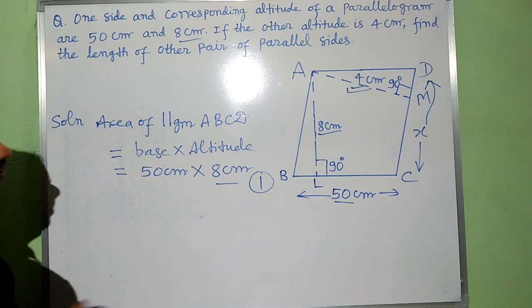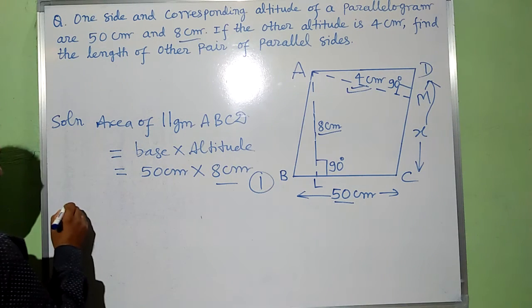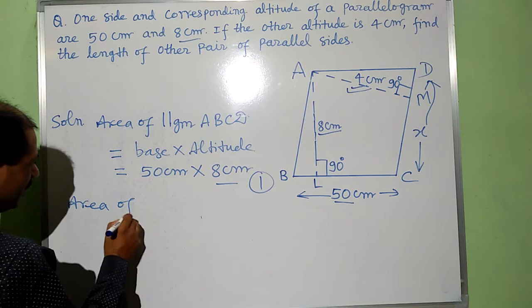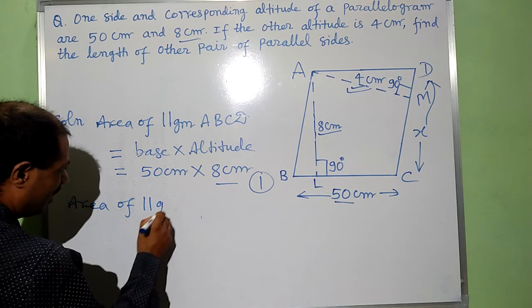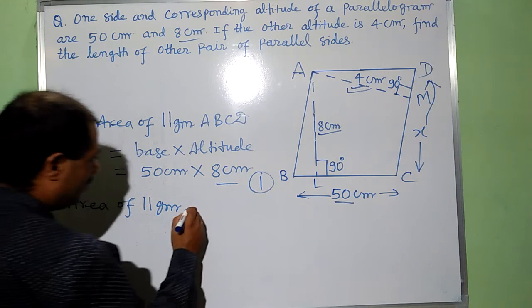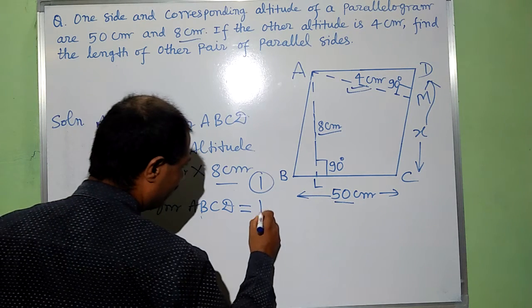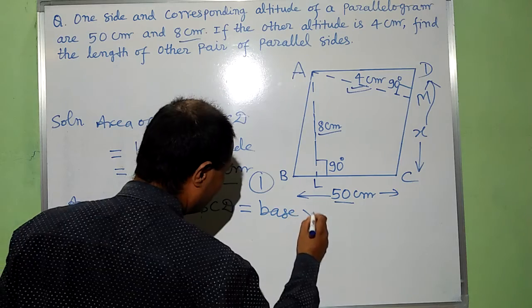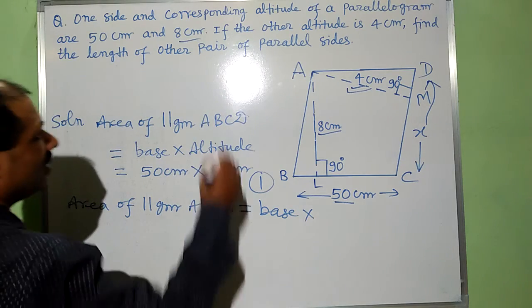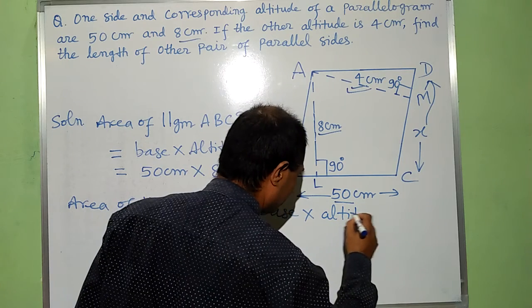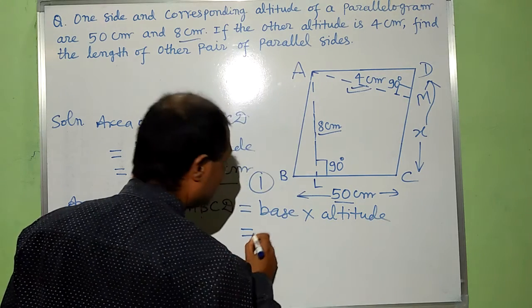Again, when we take base CD, then area of parallelogram ABCD is equal to base into other altitude.